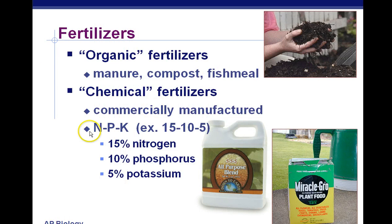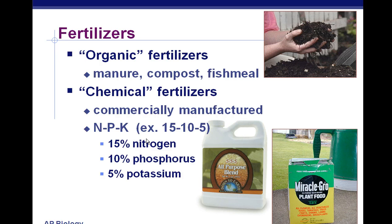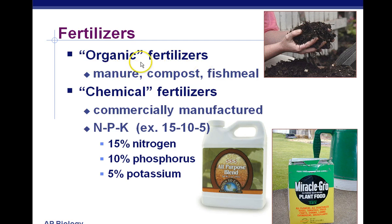Fertilizers are a combination of three things you need to know: nitrogen, potassium (K), and phosphorus — NPK. There are different ratios of these three macronutrients that plants need. Carbon, oxygen, and hydrogen come from the atmosphere and water, so there's no shortage. But nitrogen, phosphorus, and potassium are found in the soil and can run out. Organic fertilizers include manure, compost, and fish meal — basically dead animals or animal waste products.